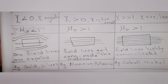Paramagnetic: Chi greater than zero. Chi is positive, small. μᵣ greater than one. Field lines get concentrated inside the material. Example: Aluminium, potassium.